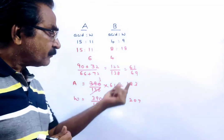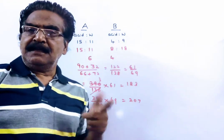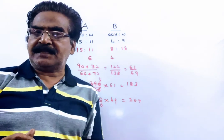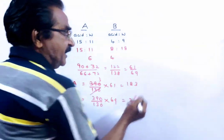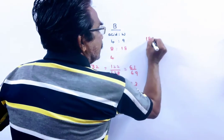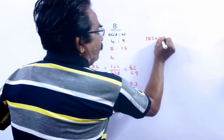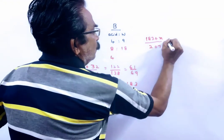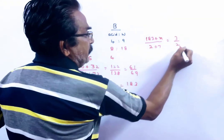Now the question is how much acid must be mixed so that the ratio of acid and water in the resultant mixture is 3 to 2. Say x litres of acid is to be added. 183 plus x by water 207 is equal to 3 to 2.